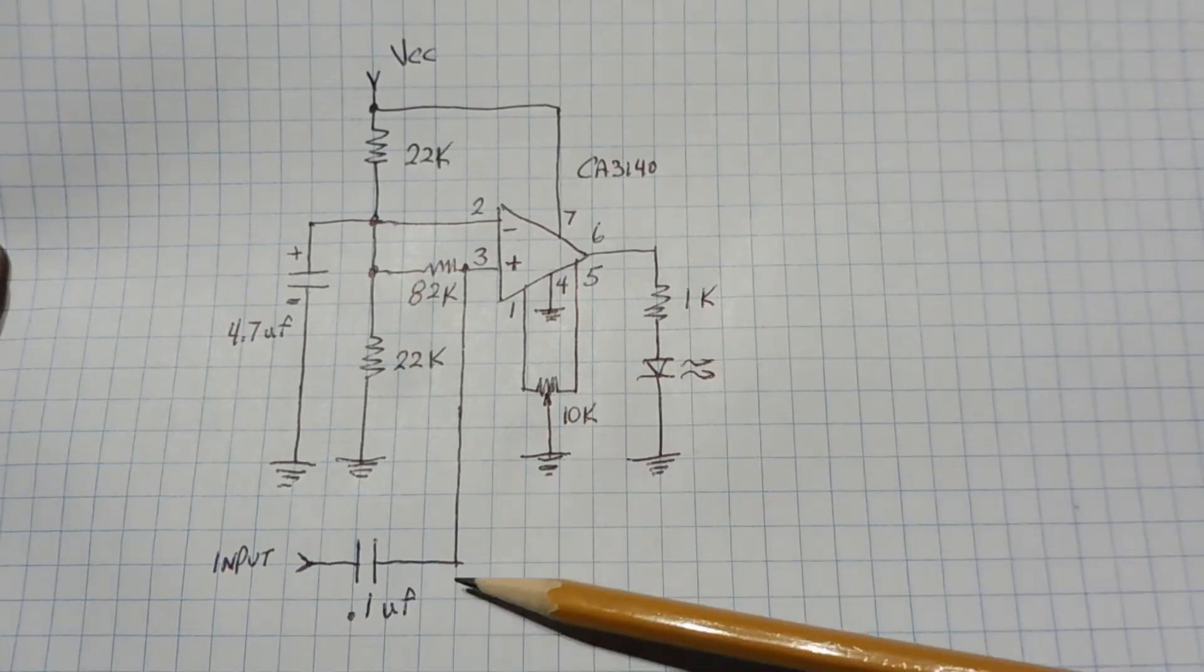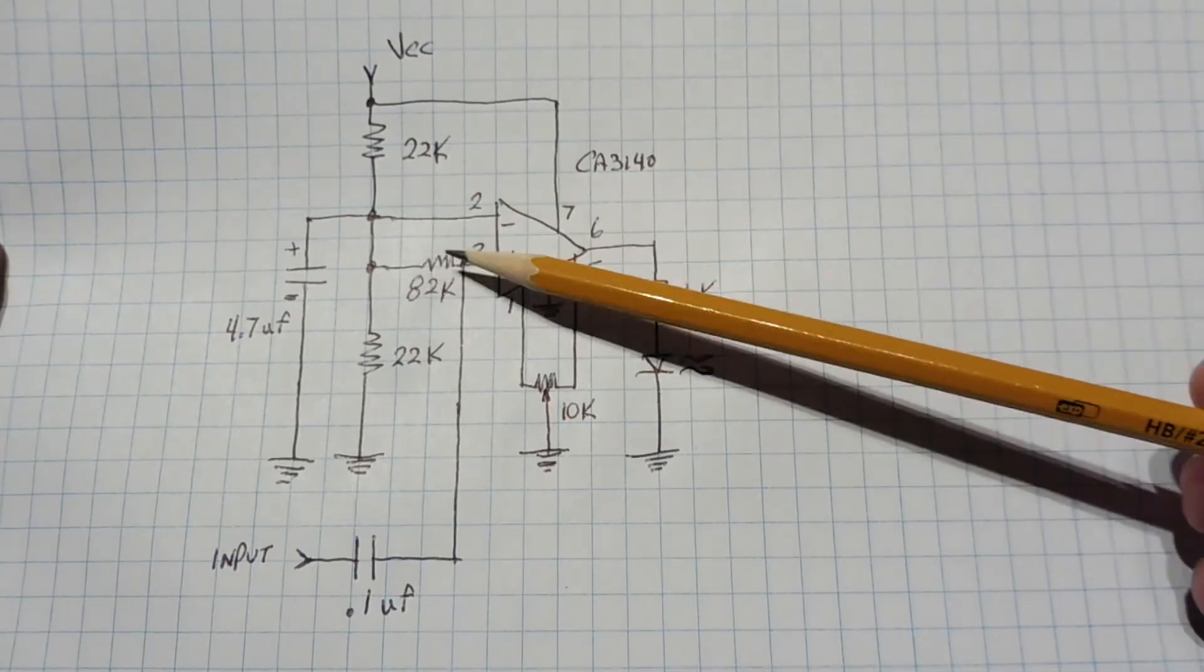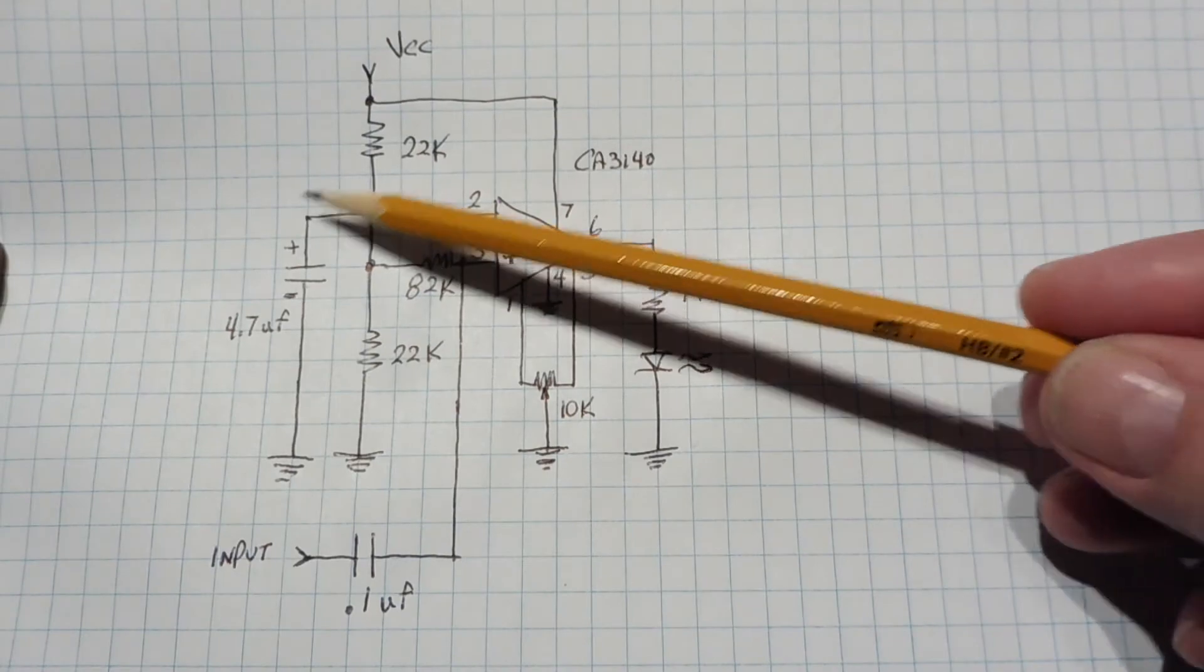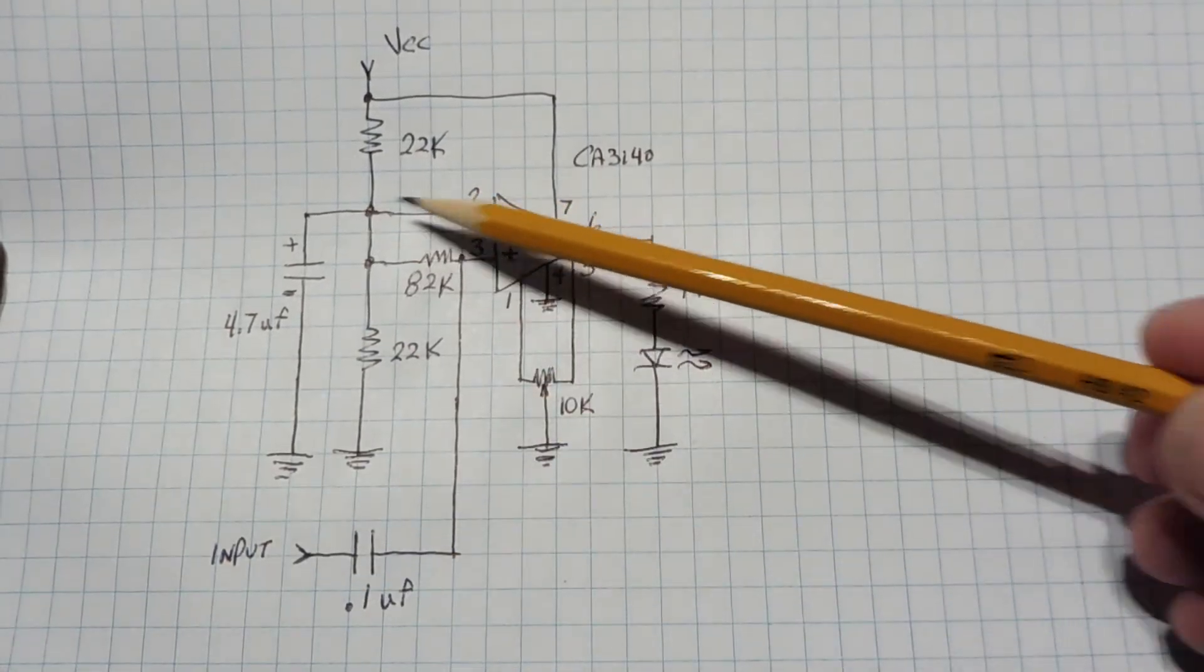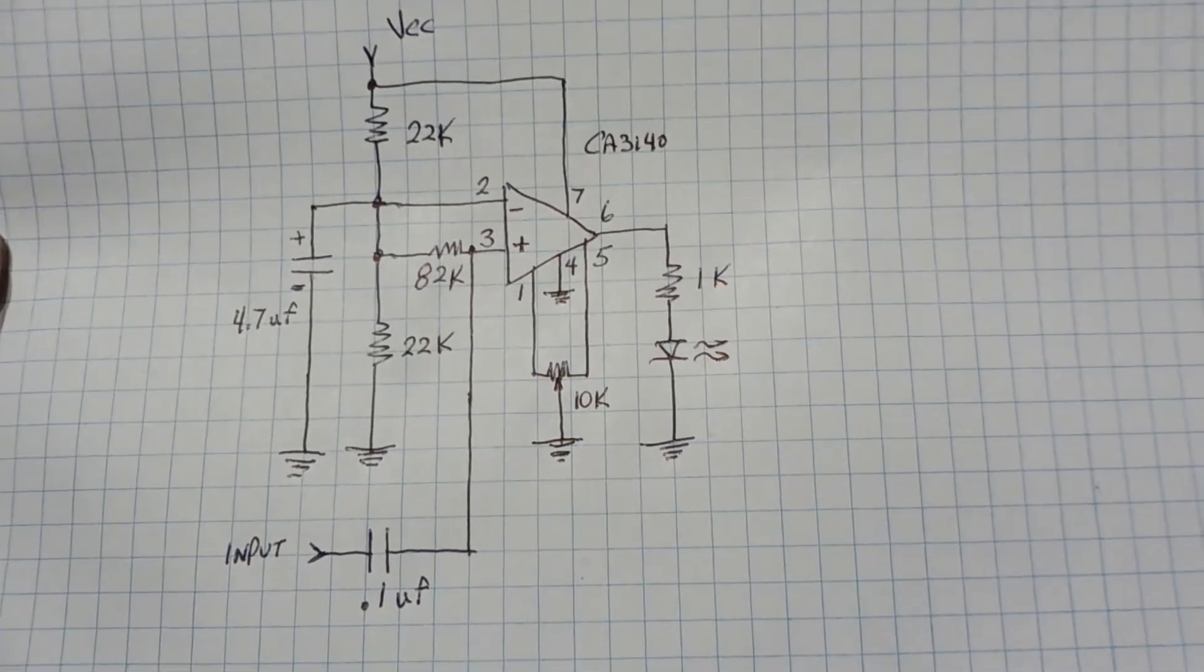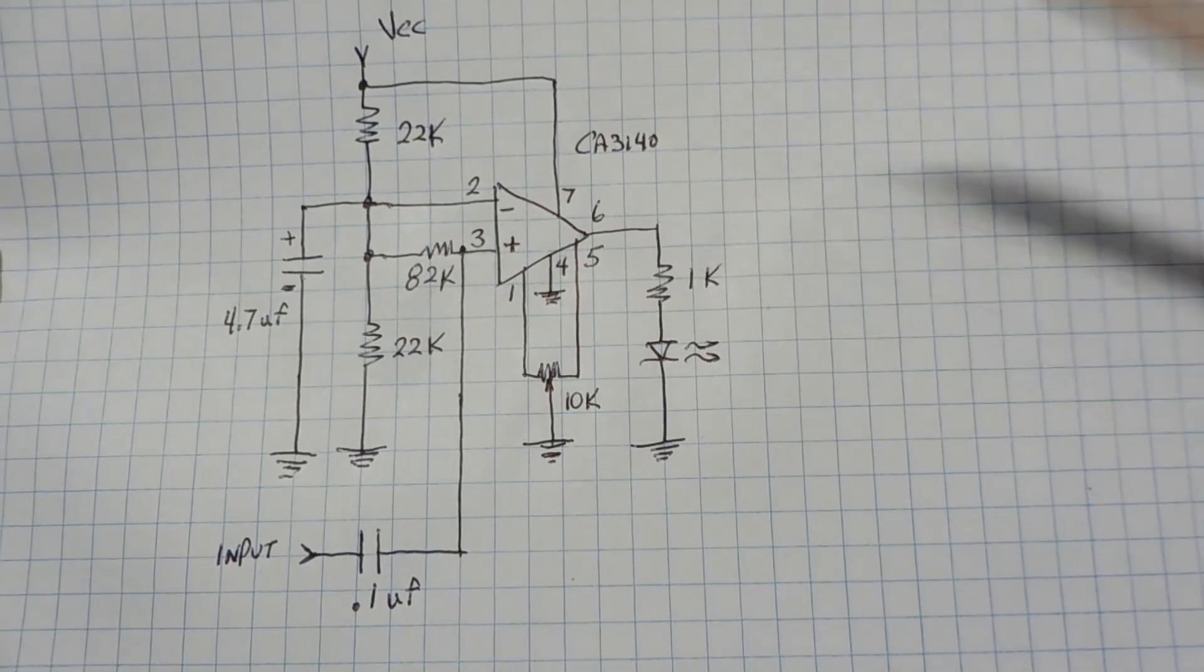Now the input signal coming into pin three, we don't want to get that into pin two because that will just cancel itself out. So we have an 82k ohm resistor and we have a capacitor on pin two that'll filter any input signal trying to get into pin two, it'll shunt it to ground. So that's basically the circuit there. So instead of this LED here, you can feed pin six into your microcontroller.